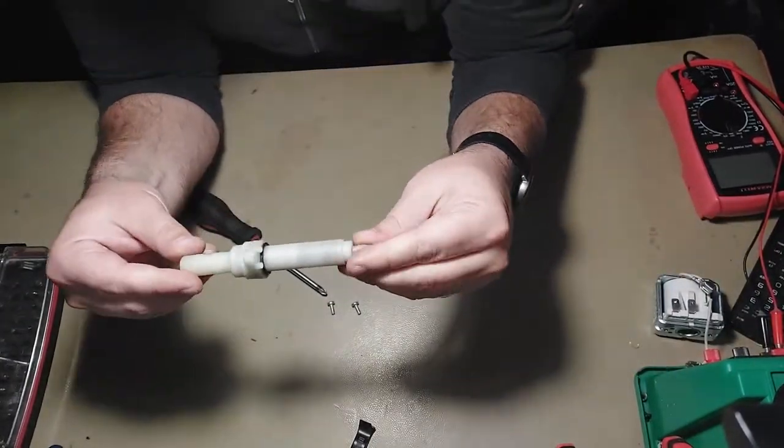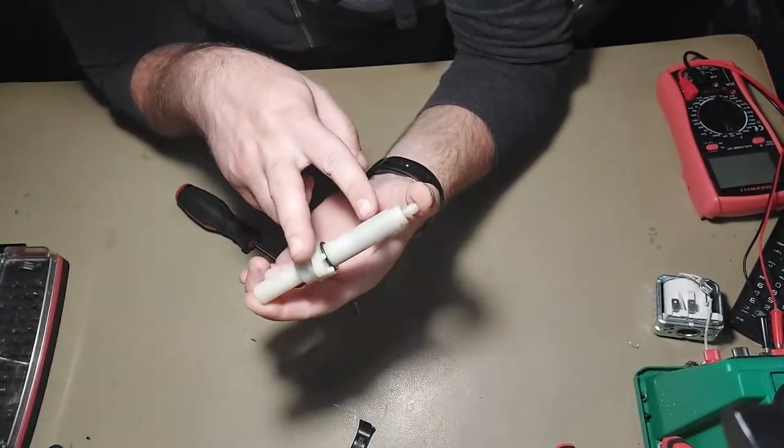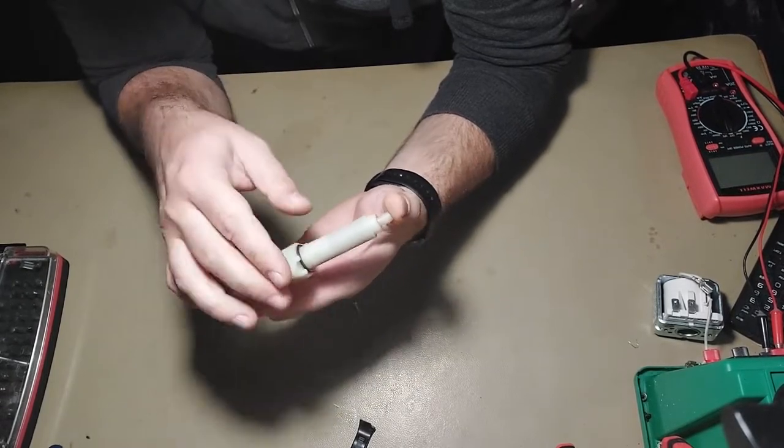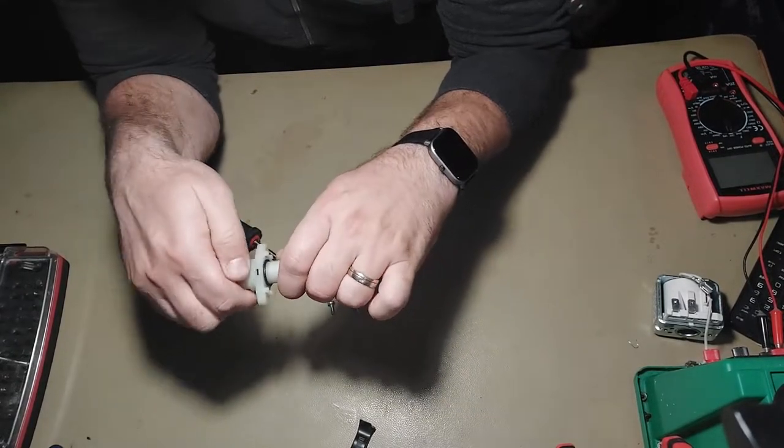And here when you open this part, be very careful because there are two springs inside, actually there are four but two main and powerful ones. So anti-clockwise, unscrew this and gently remove the inner parts.